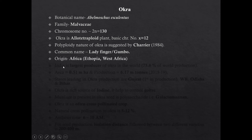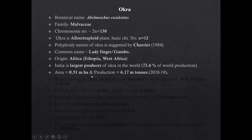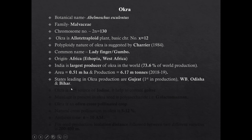Common names of Okra are Ladyfinger, Gumbo, or Bindi. Origin of Okra is Africa, more specifically Ethiopia and West Africa. India is the largest producer of Okra in the world with 73.6% of world production. Area of Okra cultivation in India is 0.5 million hectares and production is 6.17 million tonnes. Leading states in Okra production are Gujarat, West Bengal, Odisha, and Bihar.